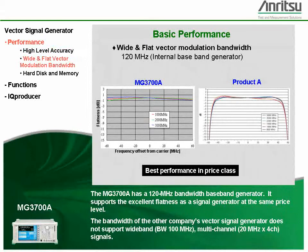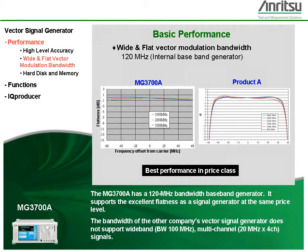The MG3700A has a 120 MHz bandwidth baseband generator. It supports the same excellent flatness as a signal generator at the same price level. The bandwidth of a general-purpose vector signal generator does not support wideband or multi-channel signals, such as bandwidths of 100 MHz or more and 20 MHz by 4 channels.